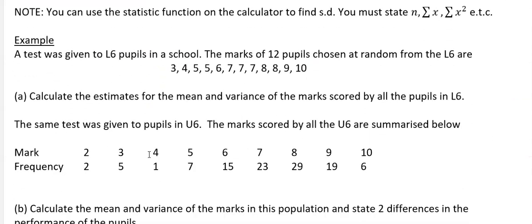If we look at the example, it says a test was given to lower sixth pupils in a school. The marks of 12 pupils chosen at random from the lower sixth are given, and part A says calculate estimates of the mean and variance of the marks scored by all pupils in lower sixth.